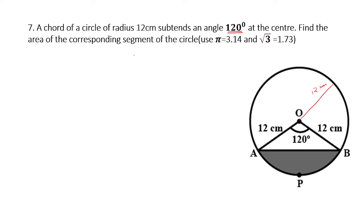We are asked to find the area of the corresponding segment of the circle — this shaded area. Now, it becomes difficult to find the triangle directly. We cannot use Pythagoras theorem because the angle is not 90 degrees. Neither can we use the equilateral triangle formula because all angles are not 60-60-60. Since the central angle is 120, the base angles must be 30 each.